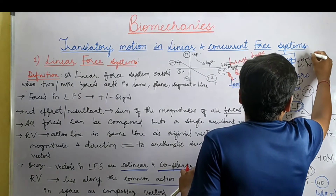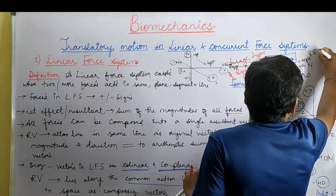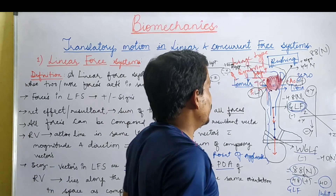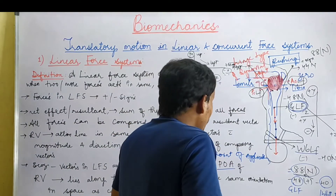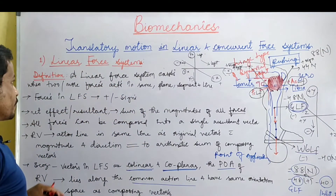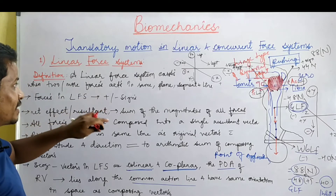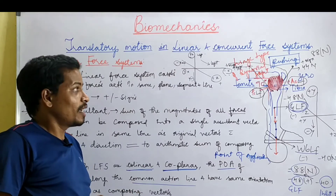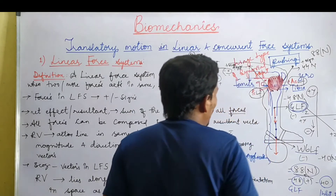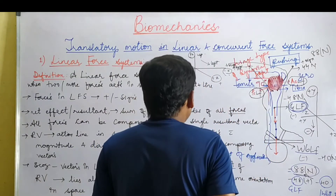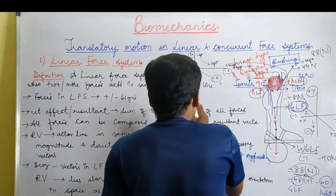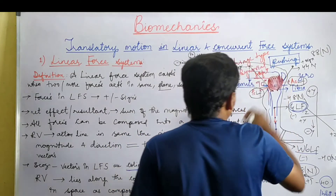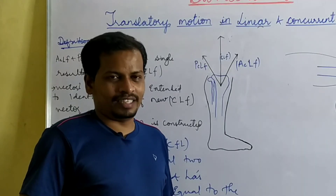We got a resultant force of minus 88 Newtons acting in the downward direction. Taking the anterior capsular force vector as 44 Newtons and the posterior capsular force vector as 44 Newtons — both acting with respect to the positive y-axis — they are assigned positive signs. A net force of 88 Newtons acts in the upward direction to balance the minus 88 Newtons acting downward. However, these two force vectors are not acting in the same plane and the same line, so they are not part of the linear force system.